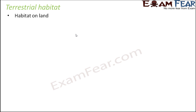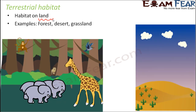The first type is terrestrial habitat — this is the habitat on land. Animals which live on land have habitats called terrestrial habitats. In fact, the animals living on land are called terrestrial animals. Some examples of terrestrial habitat are forest, desert, and grassland — these are all on land.